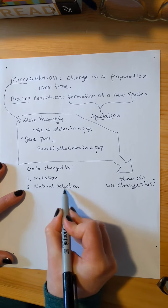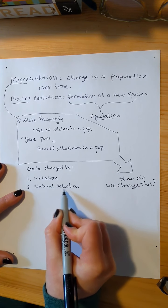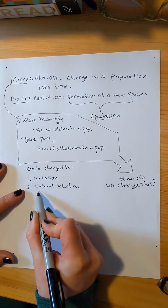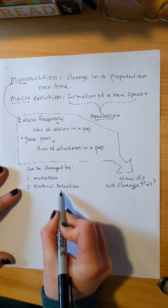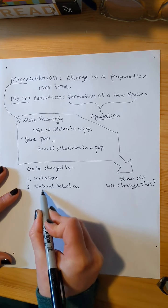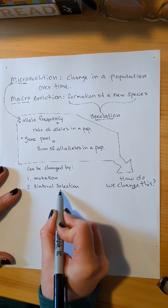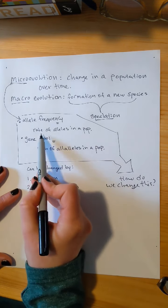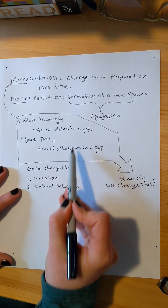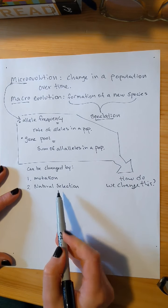We can change it with natural selection. So some of these alleles are going to be more successful in an environment than others. If your animal is not well camouflaged, it might not be able to reproduce. That changes the rate of its alleles in your population.